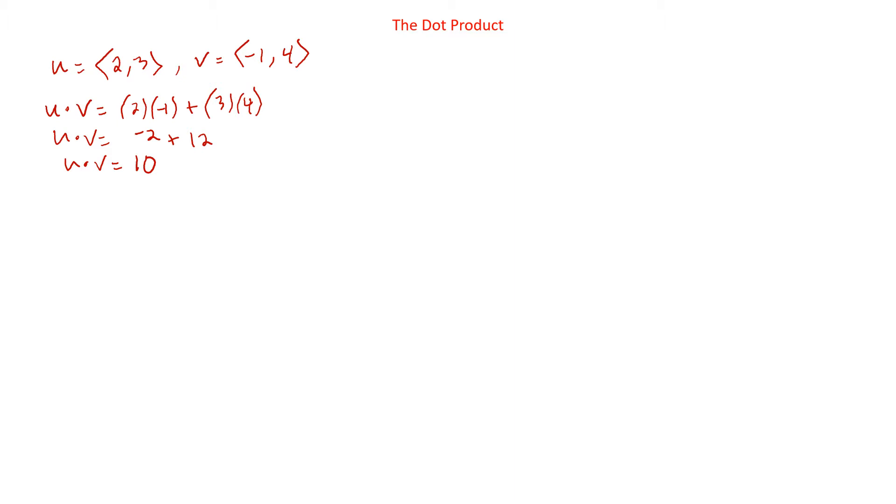u dot v is 10. Notice it is not negative 2 comma 12. That would be the most common wrong answer I get for this. People get it all the way down to the very last step, and then they just don't add the two numbers together. Someone's going to do it. Don't be that guy. Let someone else be that guy. But what we get when we take the dot product is we get a scalar. This is a number. Notice it's not a vector anymore. It's not something comma something. It's just a scalar. It's just a number.